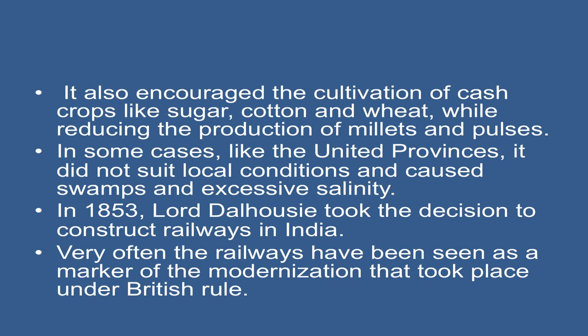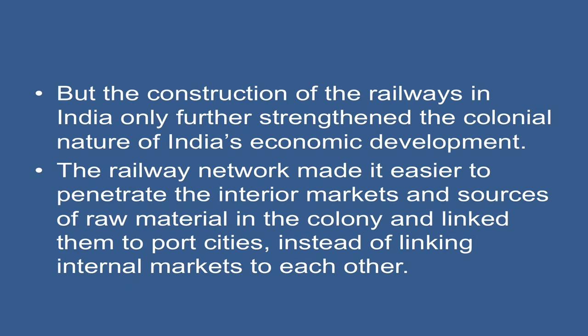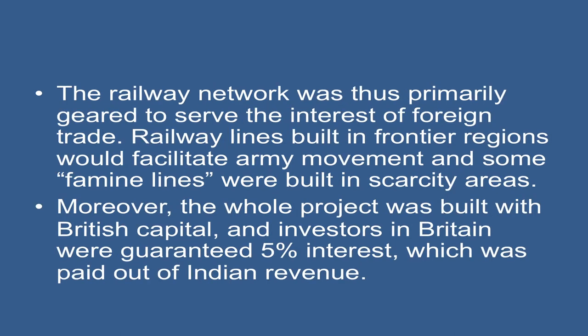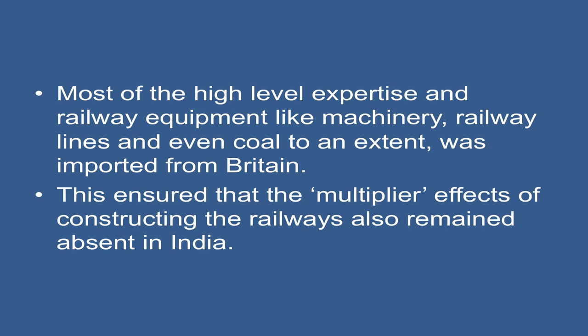In 1853, Lord Dalhousie took the decision to construct railways in India, but the construction of railways only further strengthened the colonial nature of India's economic development. The railway network made it easier to penetrate the interior markets and sources of raw material in the colony and linked them to port cities, instead of linking internal markets to each other. The railway network was thus primarily geared to serve the interests of foreign trade. Moreover, the whole project was built with British capital, and investors in Britain were guaranteed 5% interest, which was paid out of Indian revenue. Most high-level expertise and railway equipment like machinery, railway lines, and even coal was imported from Britain, ensuring that the multiplier effects of constructing the railways also remained absent in India.